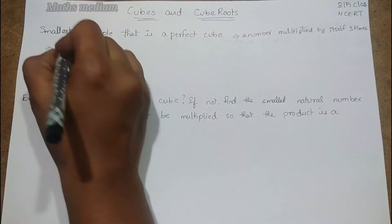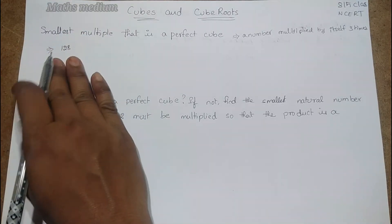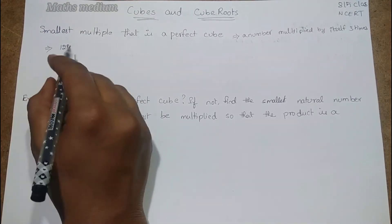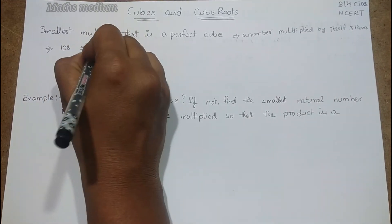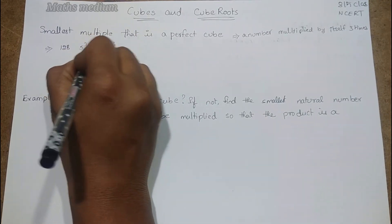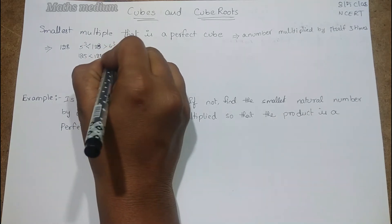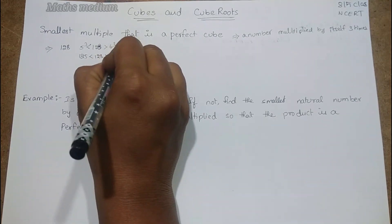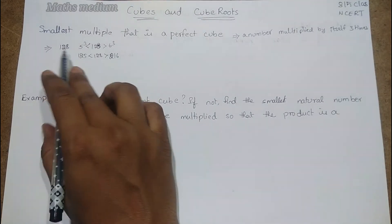I don't know whether it is a perfect cube or not. I hope it is not a perfect cube because it is between 5 cube which is 125, and 6 cube which is 216.